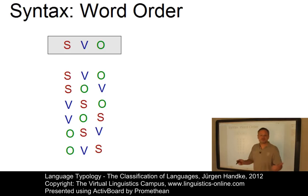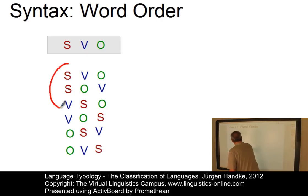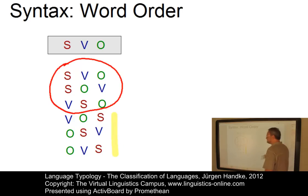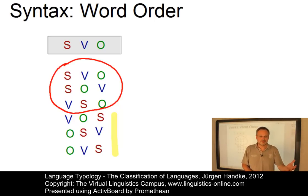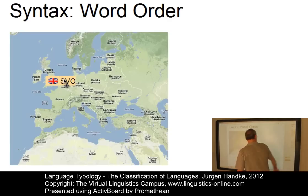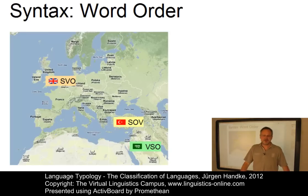In fact, all six theoretically possible types are used in the languages of the world. However, the distribution is remarkable: the first three types (SVO, SOV, VSO) cover the vast majority of the world's languages, while the other three are very marginal. What these first three have in common is that the subject always precedes the object. For example, English is a typical SVO language, Turkish is an example of SOV, and Arabic is an example of VSO.